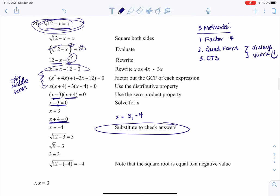If I want to check three here, you're going to see me plugging three in. So I have the square root of 12 minus three, is that equal to three? Well, 12 minus three is nine, the square root of nine is three. That checks out, so I'm going to keep that.